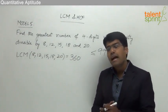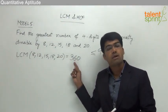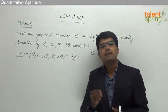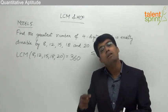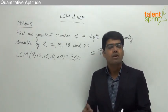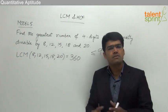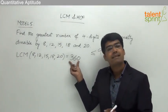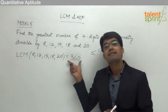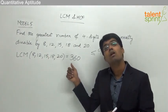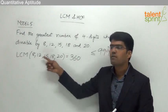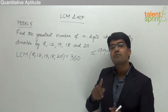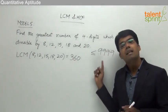From the basics of LCM, not only the LCM itself but all its multiples are also divisible by the given values. For example, if 20 is divisible by a certain set of values, then all multiples of 20 — like 40, 60, 80, 800, 8000 — are also divisible by those values. Similarly here, 360 is the LCM, so all multiples of 360 are also divisible by 8, 12, 15, 18, and 20.